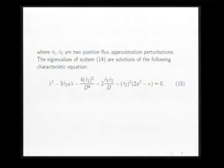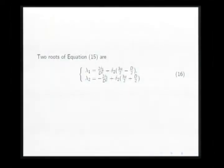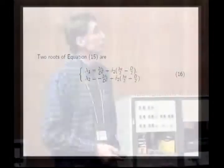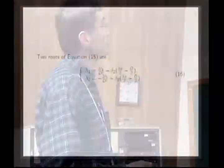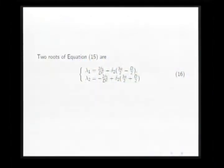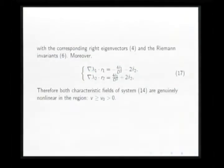Well, where Delta 1 and Delta 2 are two positive flux approximation perturbations, the eigenvalues of the system, the perturbation system 14, are solutions of the following characteristic equation. Two roots of the equation are, I found the two roots of this equation. Therefore, both characteristic fields of system are genuinely nonlinear in the region V bigger than V0. V0 is a positive constant.